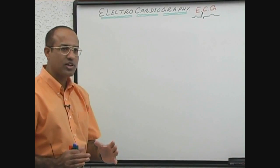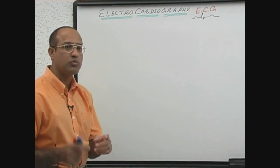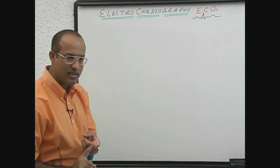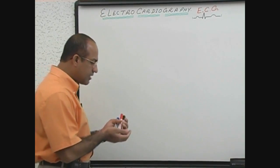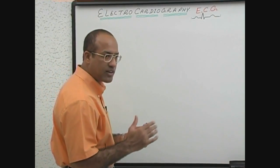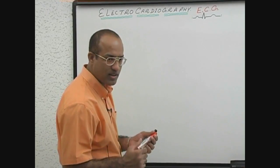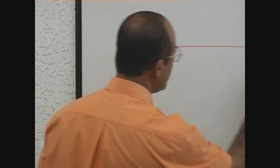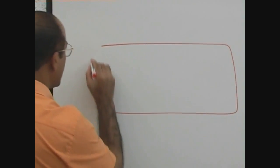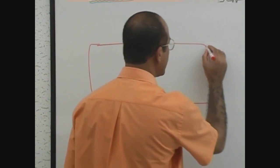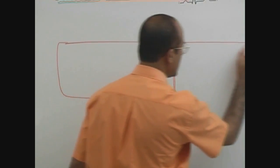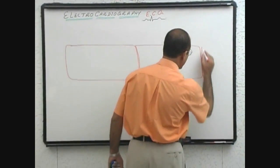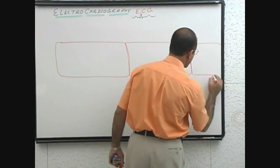To really understand the fundamentals of ECG, you must first understand the electrical activity of the heart. Let's talk a few words about the electrical activity in the myocardial cells. Here I draw three ventricular myocardial cells, and we see what the electrical activity normally looks like in these cells.